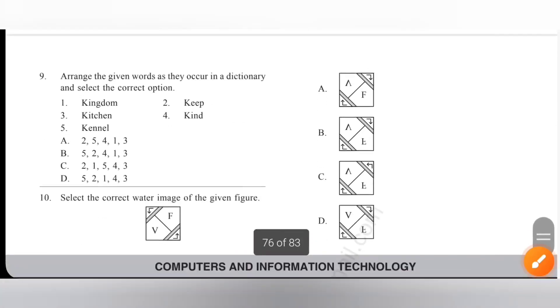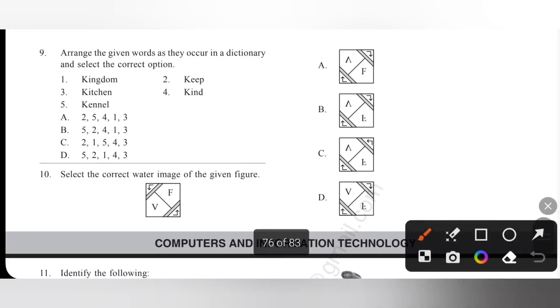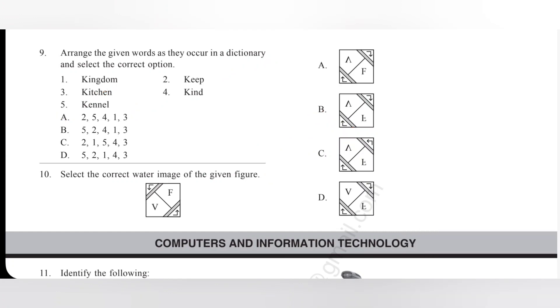Ninth one, arrange the given words as they occur in a dictionary and select the correct option. First one kingdom, 2 keep, 3 kitchen, 4 kind and 5 kennel. So first K and E will come. Keep is 1 and kennel is 2. So 2, 5 means option A. Next one is kind, next kingdom, so last one is kitchen. So 2, 5, 4, 1, 3 - option A.